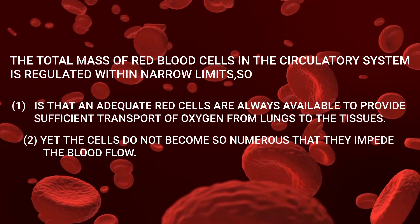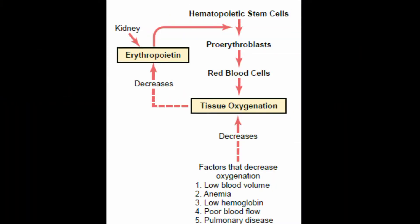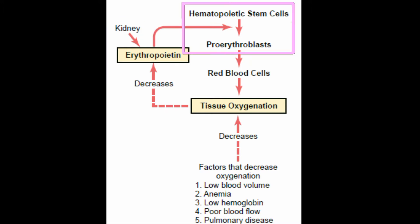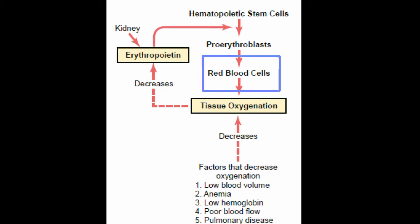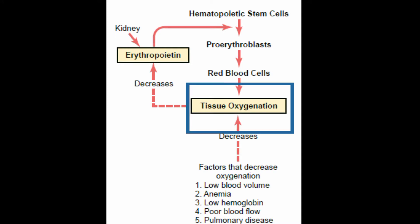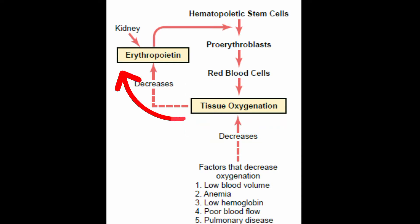Now let's take a look at this control mechanism with the help of a diagram. Erythropoietin, which is formed by the kidneys, helps the hematopoietic stem cell get converted into pro-erythroblast — so the first step is regulated by erythropoietin itself. Further, red blood cells are formed from the pro-erythroblast. As the concentration of red blood cells increases, tissue oxygenation increases, and a signal is sent to decrease erythropoietin concentration.